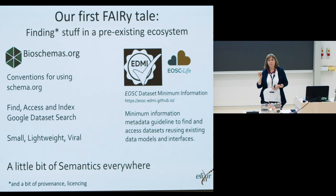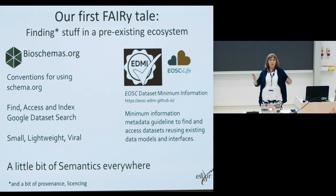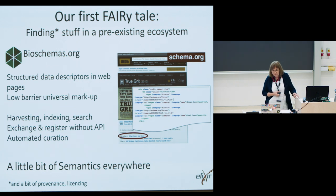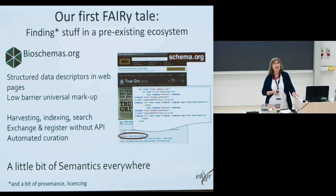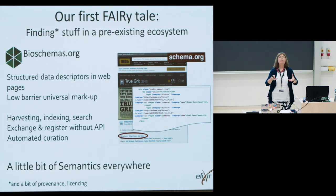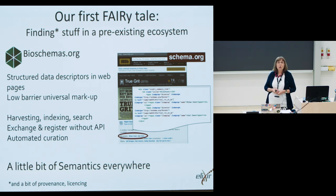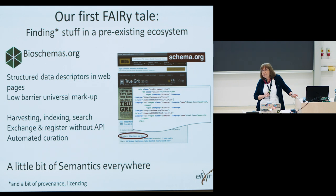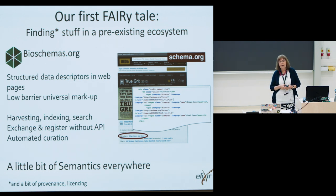Bioschemers is very small, very lightweight, very viral, and it follows a model of a little bit of semantics everywhere. Who's heard of schema.org? For the handful of you who haven't — it's structured data descriptors in web pages. Very low barrier universal markup, a little bit of embedded markup in a web page, to expose what's in that web page or data set so that you can exchange information about it, extract it from your registries, and do automated curation with it. So FAIRsharing — a registry of standards mentioned by Marianne — uses this kind of mechanism.